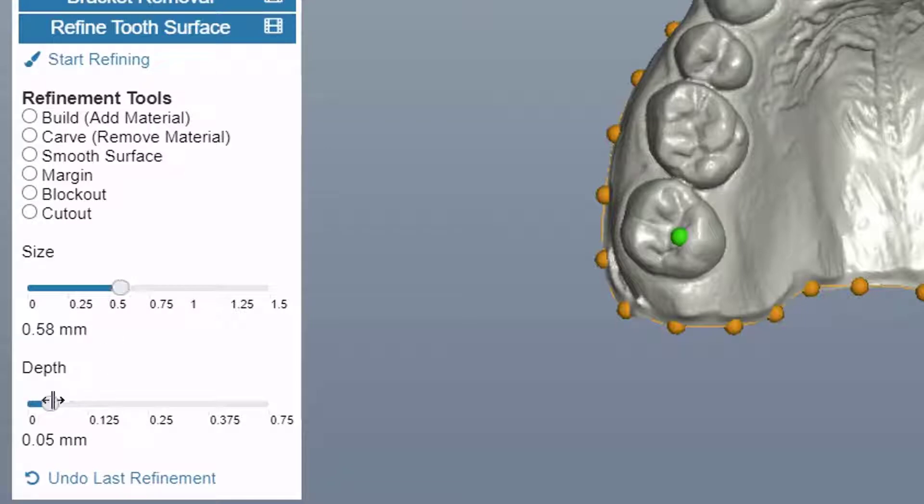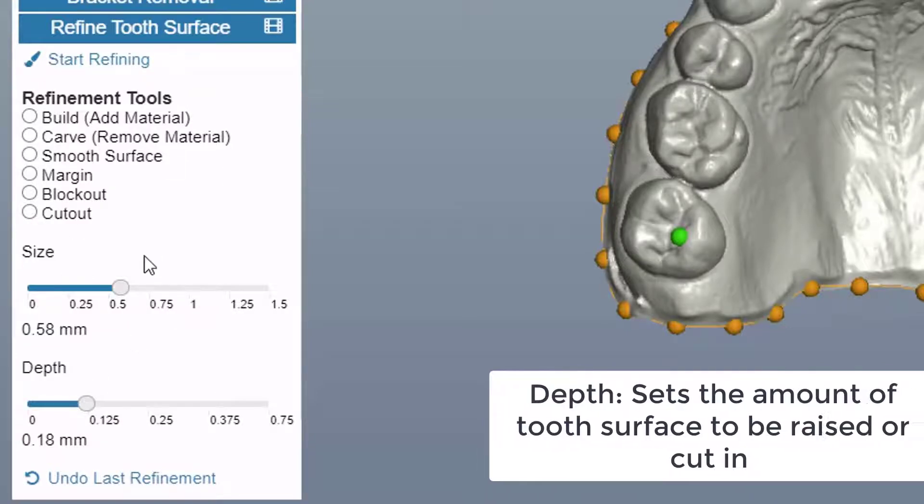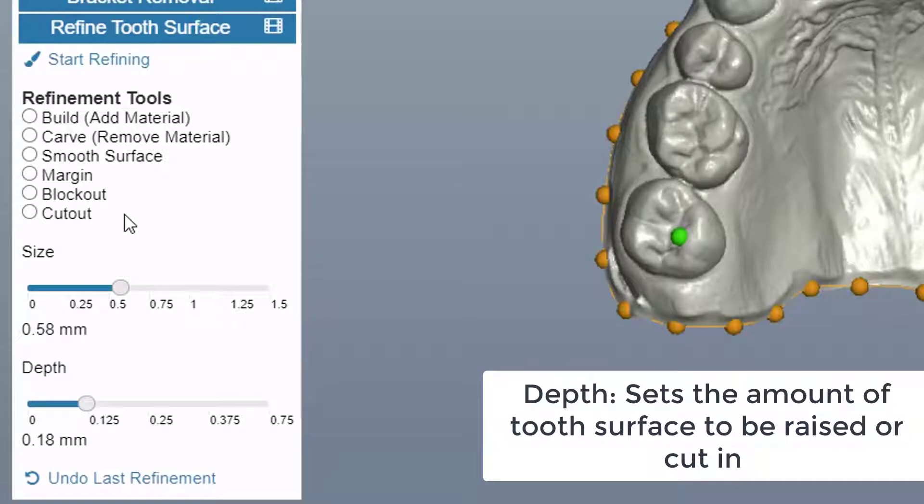And for each refinement tool, you can adjust the size and depth of the brush on the tooth surface. Size sets the brush setting for the amount of tooth surface to be refined, while depth sets the amount of tooth surface to be raised or cut in.